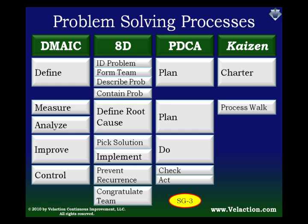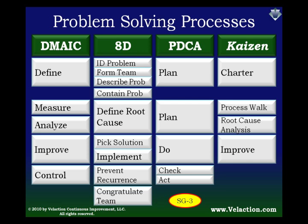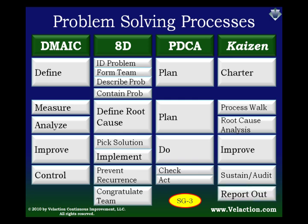You'll often find a Kaizen team starting off with a process walk, which is similar to the Measure step. The team members then look for root causes of the problems they identify. This is followed by actively making changes to improve the process, and then creating a plan to sustain and audit the gains. Finally, most Kaizen teams celebrate the conclusion of the event with a report out.